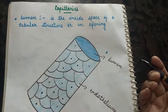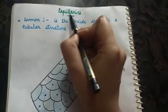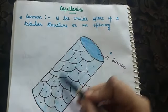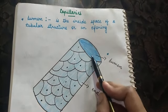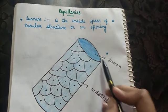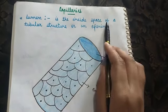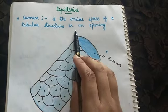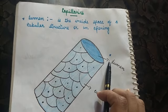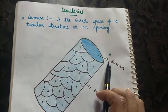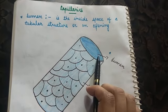Now the third and the last blood vessel that we will discuss in today's topic is capillaries. Here you can see this is the structure of a capillary. This is a small opening which is known as lumen. This lumen is the inside space of a tubular structure or an opening, and through this opening there occurs an exchange of materials inside the blood. That is why this lumen is very important.